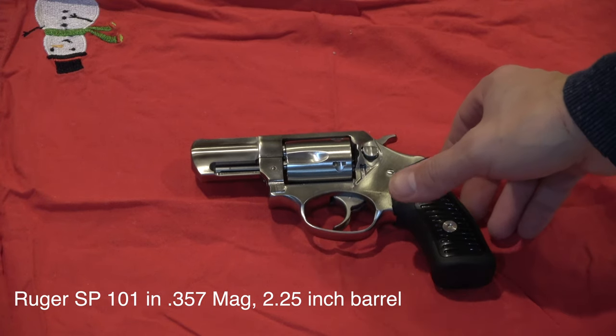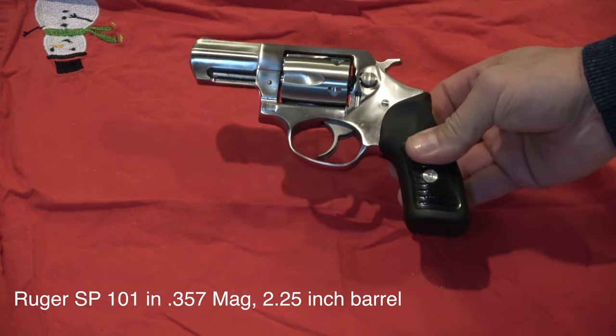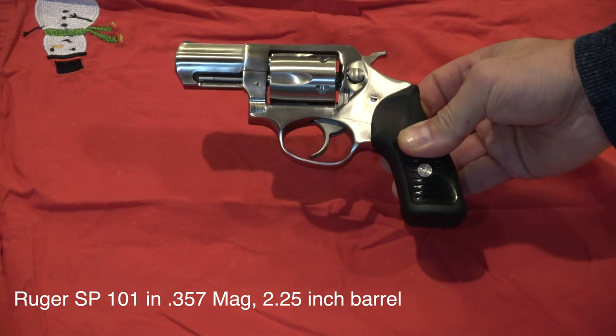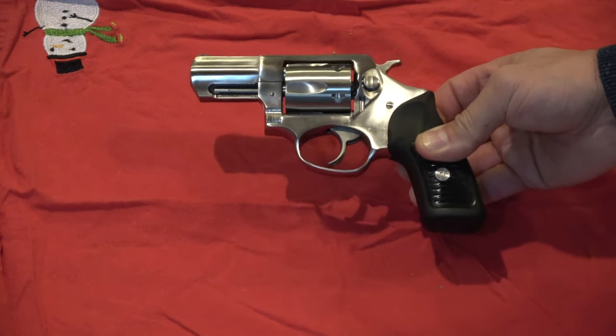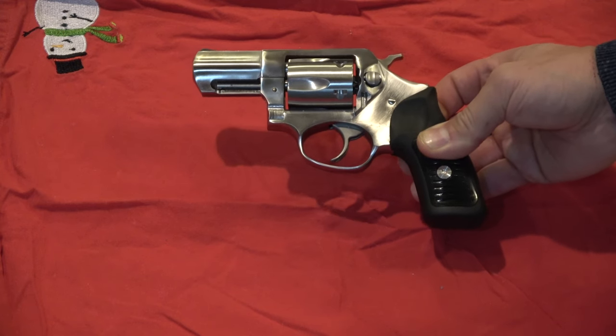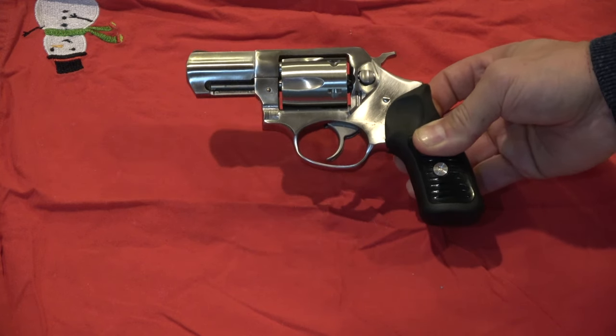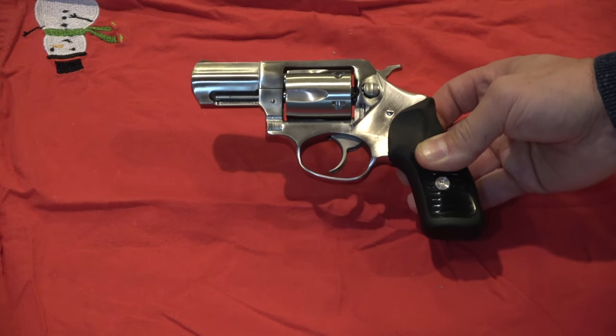So very short video today. I got my new Ruger SP-101 in .357 Magnum, two and a quarter inch barrel for Christmas. My friend Les from New Hampshire Aquaponics really loves this gun and recommended it. It's a great concealed weapon for self-defense and it packs a punch.